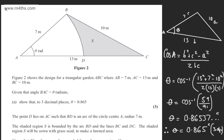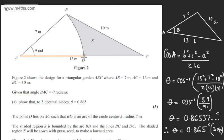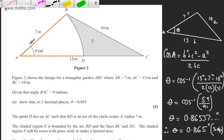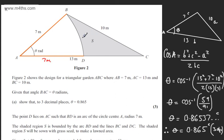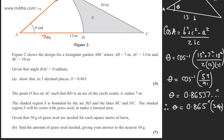Let's put some information on. What we've got is this sector with points D, A and B. AD is going to be 7 metres as well. We want the shaded region. If I find the area of the entire triangle and then subtract away the area of this sector, I get S.